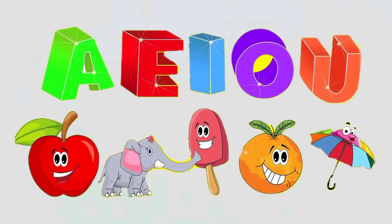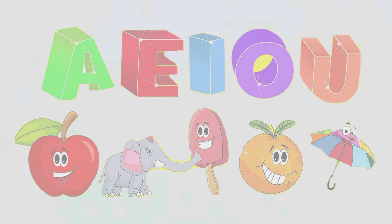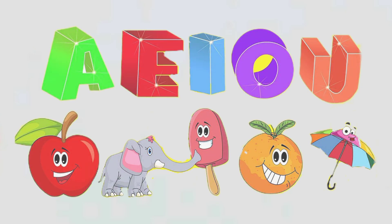A for apple. E for elephant. I for ice cream. O for orange. U for umbrella.